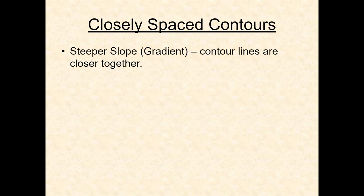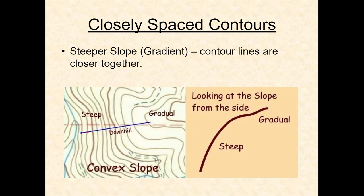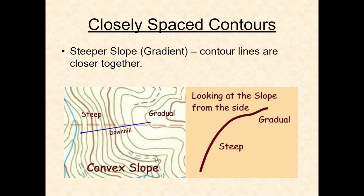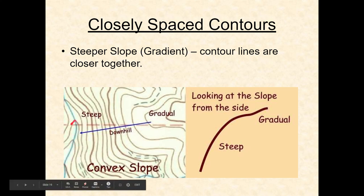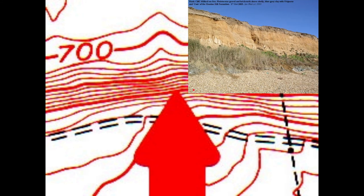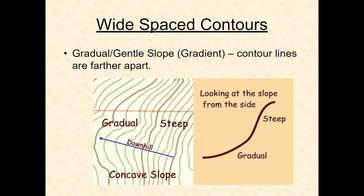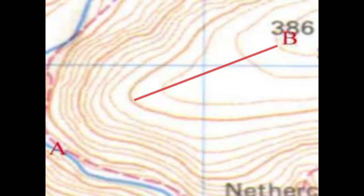Closely spaced contour lines mean a steep incline, while contours farther apart indicate a more gradual slope. The cross-section of this area would show a gradual slope that then gets really steep. If you were hiking here, it'd be easier going up the gradual section, then it drops into a very steep hillside. You can also spot the stream — note the contours V-ing upstream, confirming the stream flows from up high downward. Really closely spaced lines here indicate basically a wall.